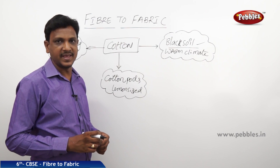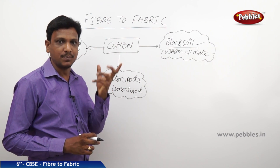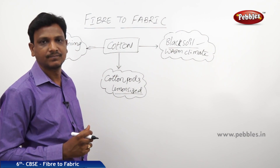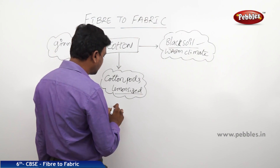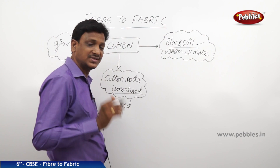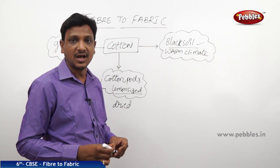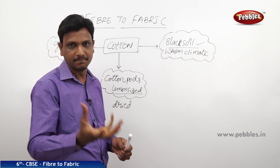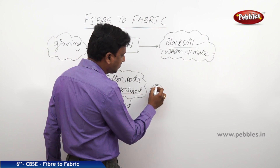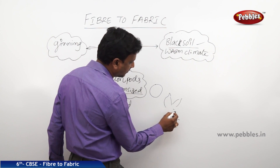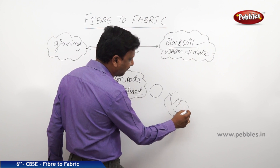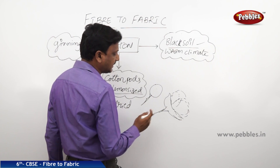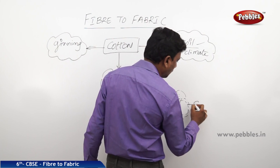The cotton plants grow, they flower, and they produce cotton pods. The cotton pods are lemon-sized. Once these cotton pods are dried up and completely dried, they pop open — just like how corn pops into popcorn, the pod pops open. So there we can see the fluffy cotton wool inside.